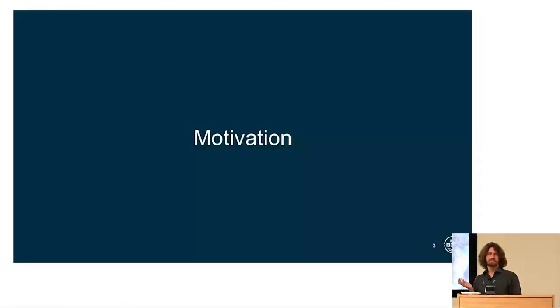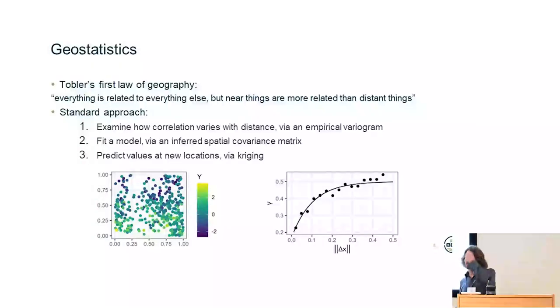So first, why is large dataset geostatistics different? We're doing geostatistics because, as Tobler's first law of geography states, everything is related to everything else, but near things are more related than distant things.